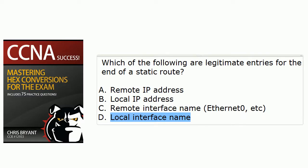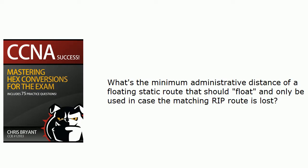What is the minimum admin distance of a floating static route when RIP is involved? It's 121, because the RIP administrative distance is 120. So if we want to make a static route that's actually going to float, that's 121. That's actually the protocol I use in those other videos I mentioned, so check those out when you get a chance.